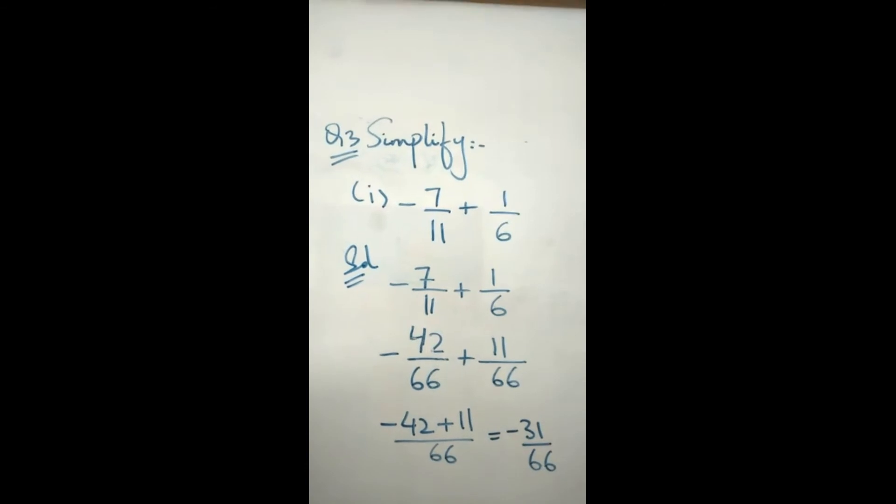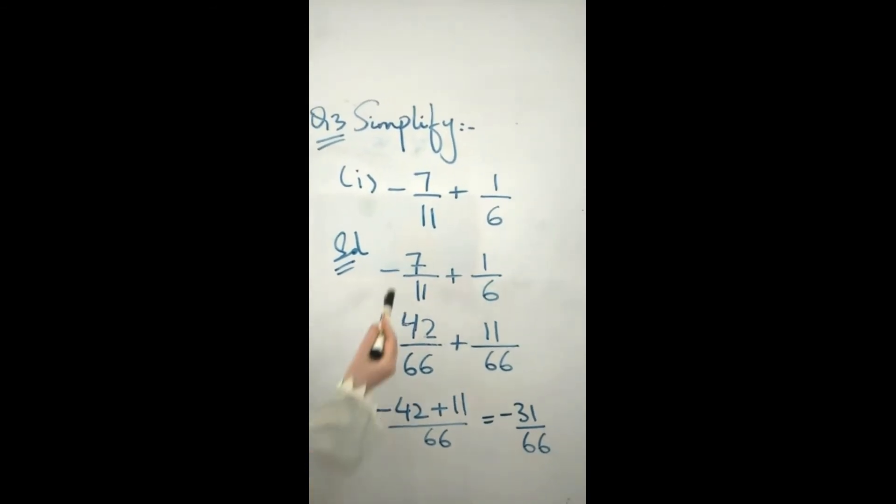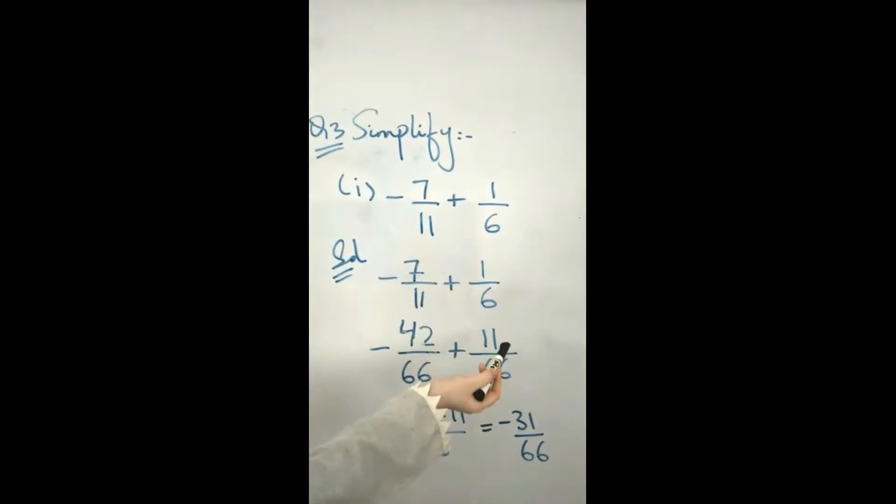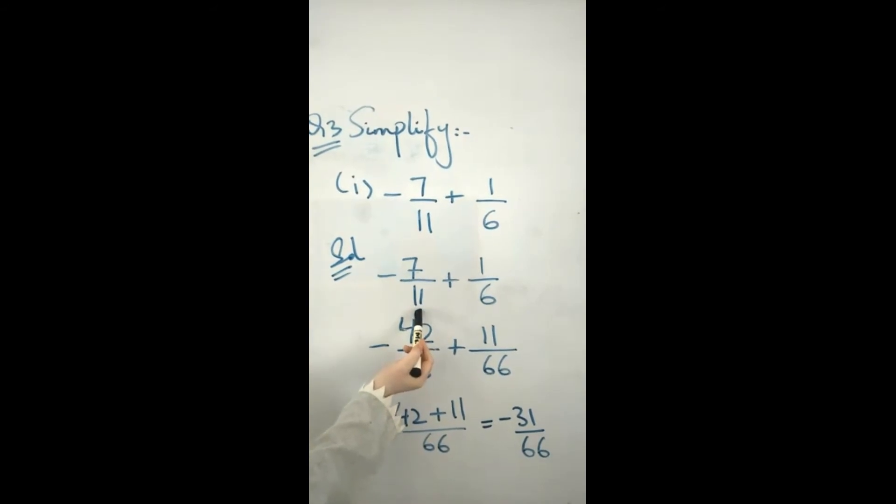Whatever operation we are given, we will solve it. -7/11 + 1/6. We have different denominators.